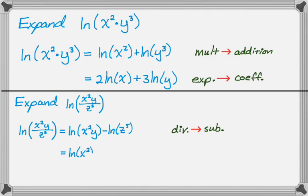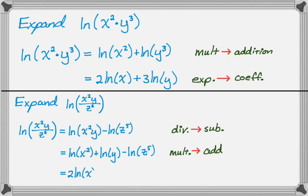Next, I'll split the product: the natural log of x squared plus the natural log of y minus the natural log of z to the 5th — multiplication inside becomes addition outside. Finally, using exponents become coefficients, I get 2 natural log of x plus the natural log of y minus 5 natural log of z.